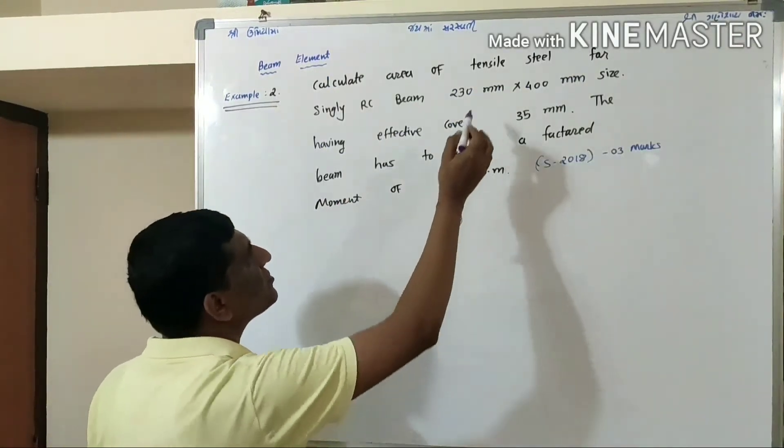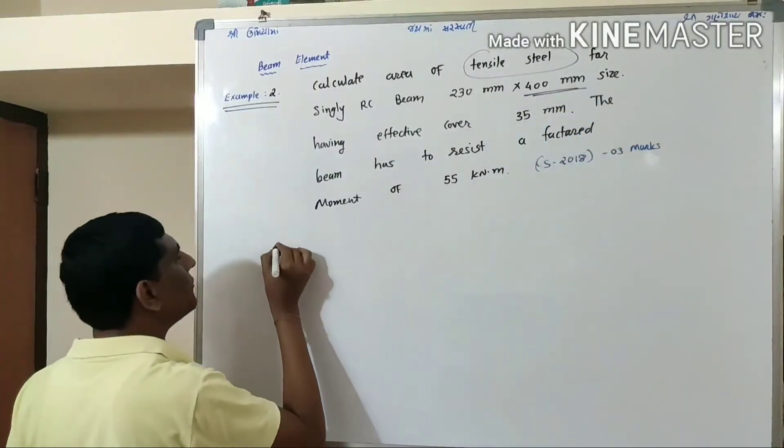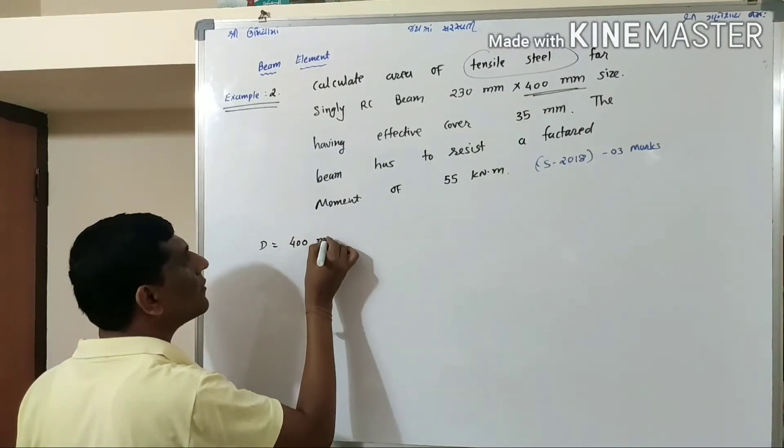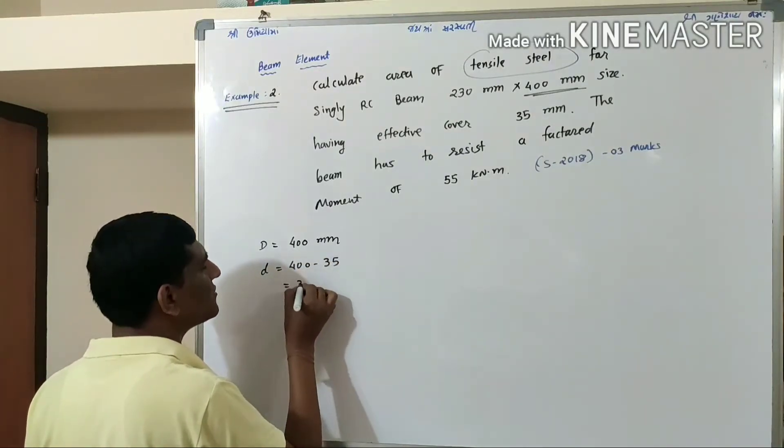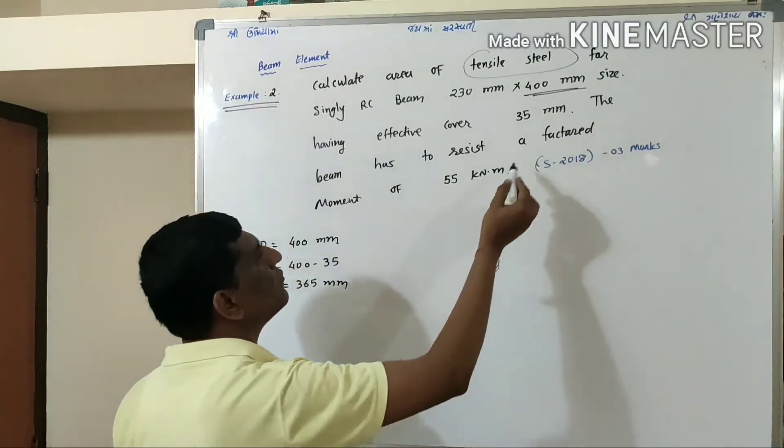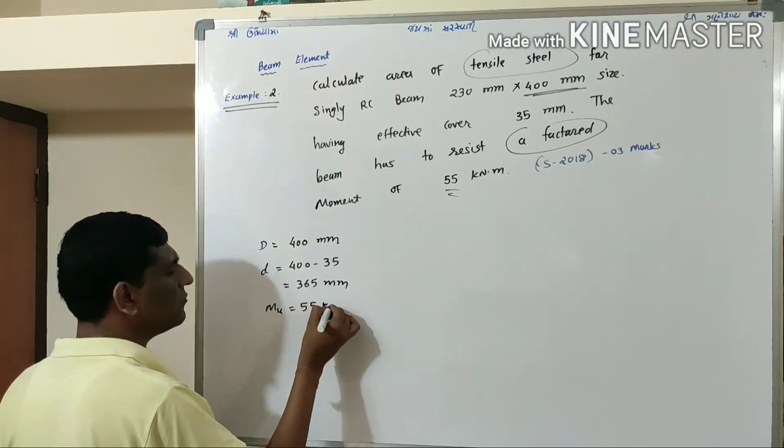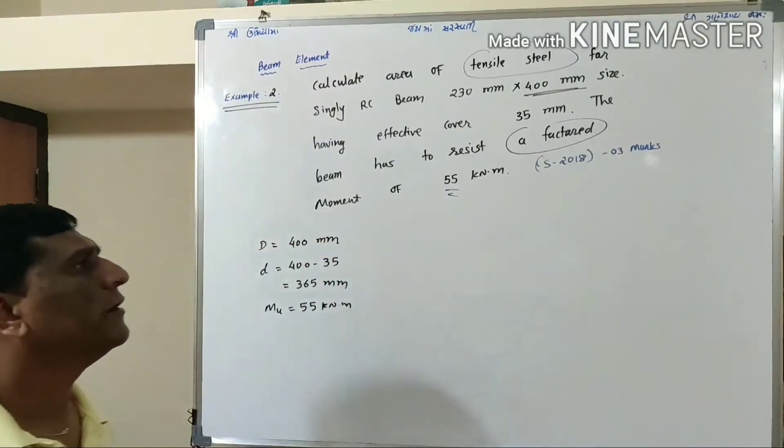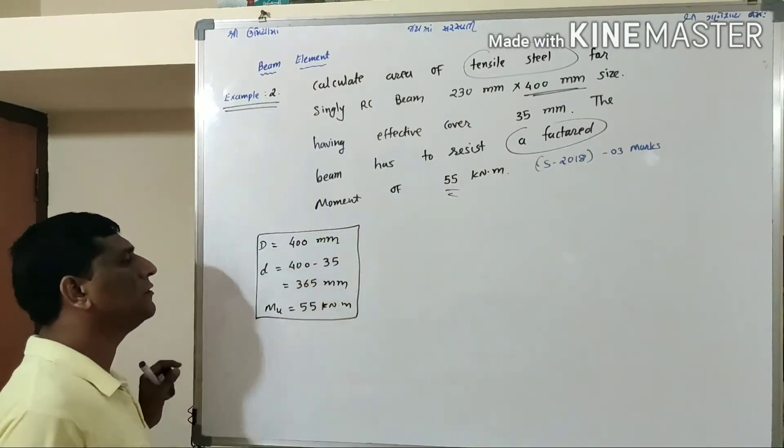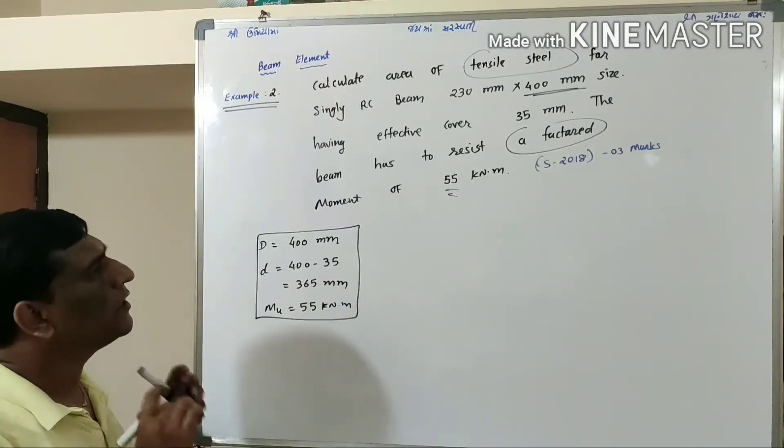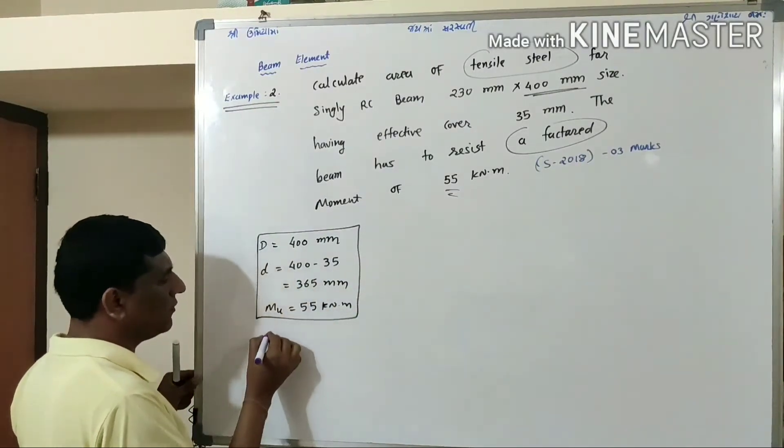Calculate the area of tensile steel for singly RC beam 230 by 400 mm size. Capital D is 400 mm and cover is given, so deduct 55 to get d = 365 mm. The beam is subject to factored moment of 55 kN·m. Here three data is given but we don't know exactly if the section is over, under, or balanced section.